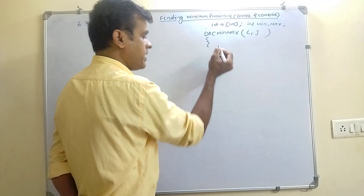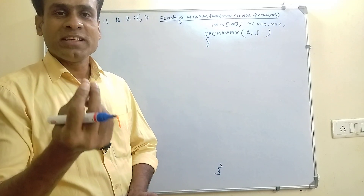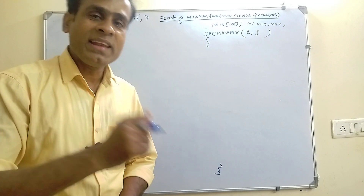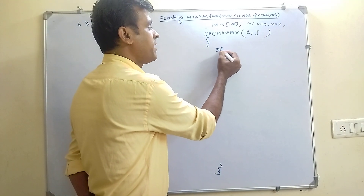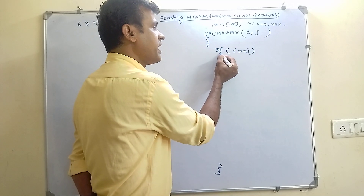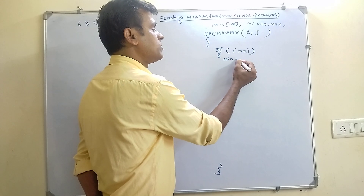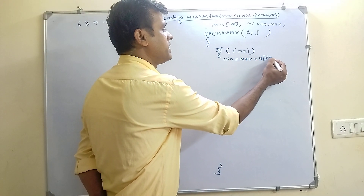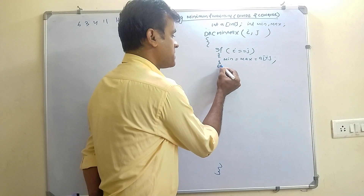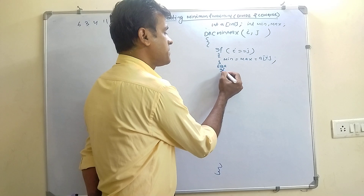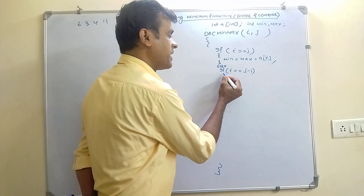Now we will write the min-max algorithm. If there is only one element, that one is min and that one is max — no comparison needed. So first we check: if i == j, that means there is only one element, then min = max = a[i]. If this is not the case, then in the else case, if there are exactly two elements, that means i == j - 1.